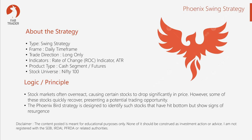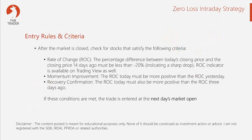The strategy works on the daily timeframe. We only have long trades — no shorts. The two key indicators we use are the Rate of Change (ROC) indicator and the ATR, which is the Average True Range. The ATR is used to identify target levels and stop loss levels. We're going to be doing this primarily on the cash segment, though those comfortable with futures could try that as well, given the margin advantage of about 1:4 or more. For the stock universe, we'll stick to only Nifty 100 — ideally you don't want to go beyond that, given the risk.